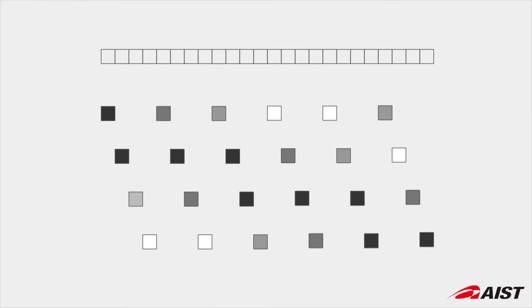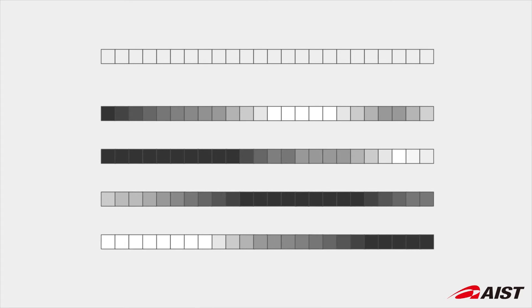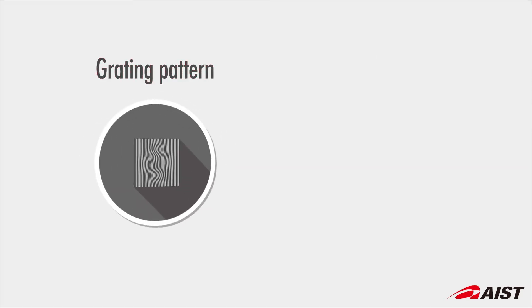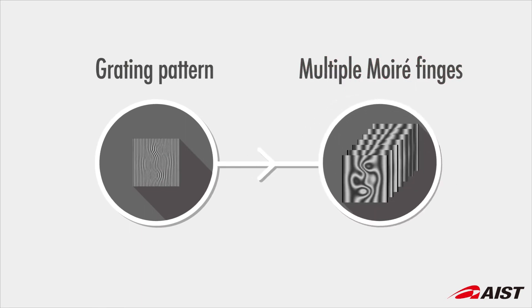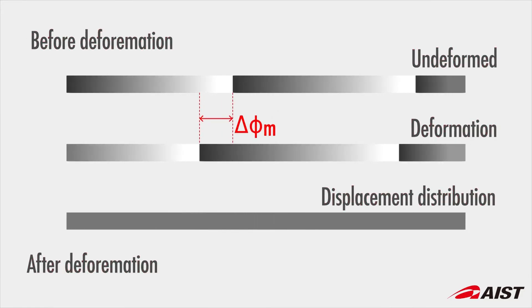Repeating the same process with different starting positions will produce multiple phase-shifted moiré pattern images with the same resolution as the original image. We can obtain the phases of the moiré patterns from these images by using a phase analysis technique, and calculate the displacement amount based on phase difference in the moiré pattern.